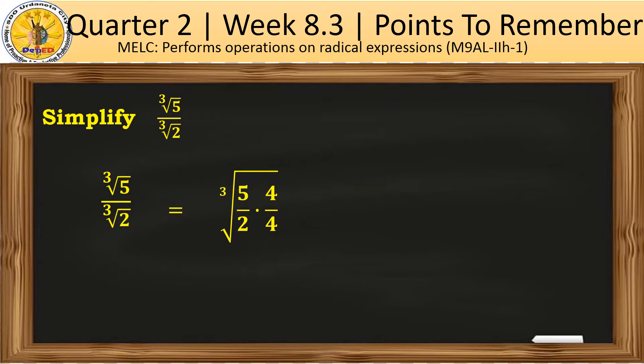Like what we did in the previous example, the next step is to rationalize the denominator. For this one, we will have to make the denominator a perfect cube number. Since the number is 2, I will multiply that number by 4. Whatever you multiply in the denominator is the same number that you will multiply in the numerator. That's why we have 5 over 2 multiplied by 4 over 4.